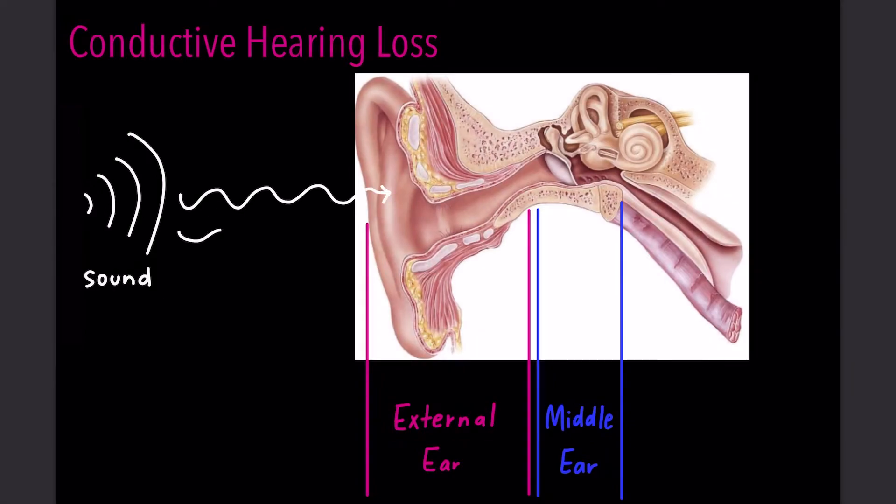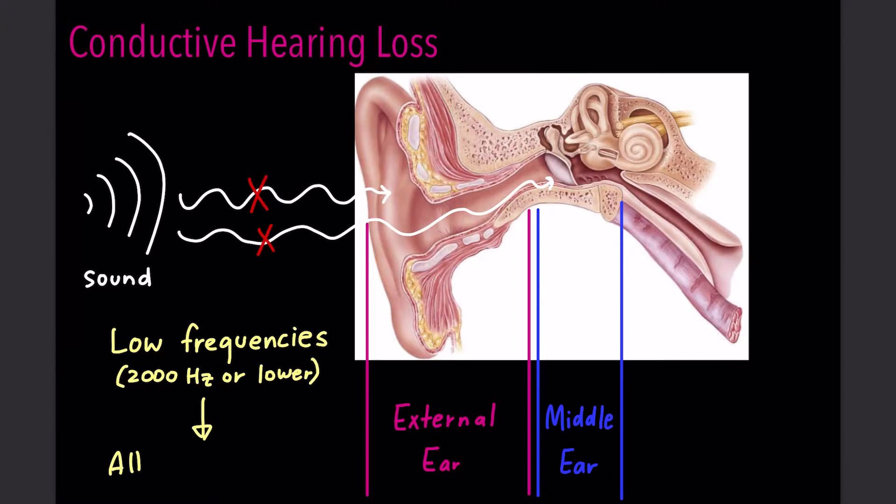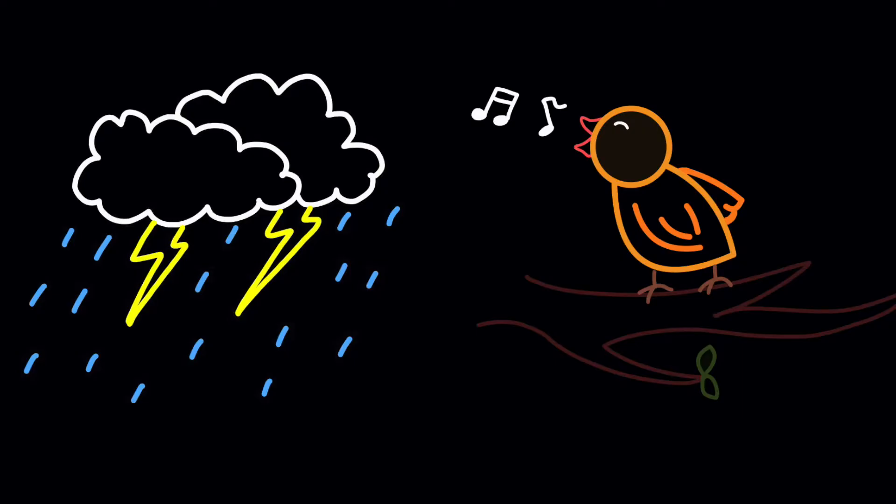Conductive hearing loss occurs when sound conduction is impaired from traveling through the external ear, the middle ear, or both. Generally, it affects low frequencies first and can progress to affect all frequencies. Examples of low-frequency sounds are a rumble of thunder, and examples of high-frequency sounds are a whistle or bird chirping.